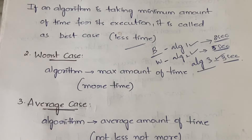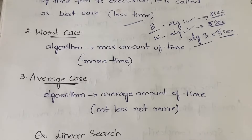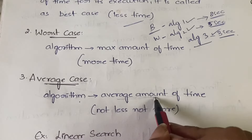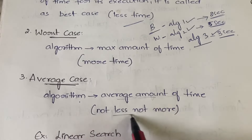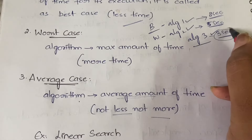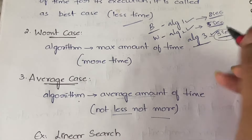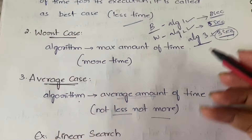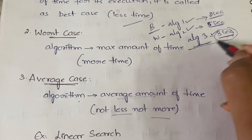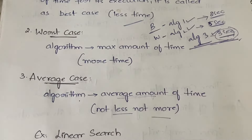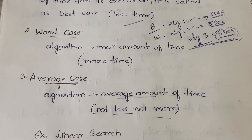Next is average case. If an algorithm is taking an average amount of time — not the least, not the most — it is average case. Here, Algorithm 3 takes 3 seconds: it is not the minimum and not the maximum, so it is the average case time complexity.